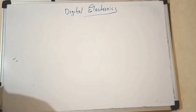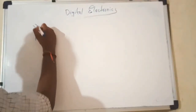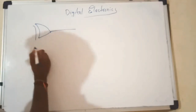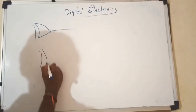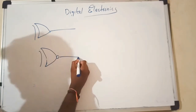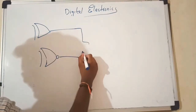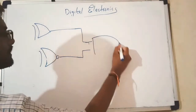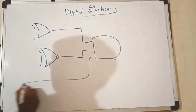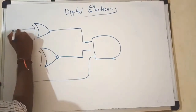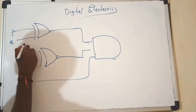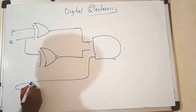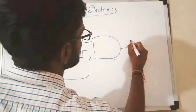Let us see another portion. Given the circuit: this is an XNOR gate, and its two outputs are given to an AND gate. The inputs are C, A, B, B, and C, and the output is F.